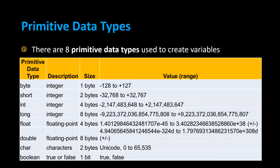Then there are two floating point primitive data types: float and double. Double is double as precise as float — that's why it's called double. In Java, you typically only use double. Nobody really uses float; it's not as accurate and you're going to get mistakes in your calculations. Stick with double — it's a lot more precise.